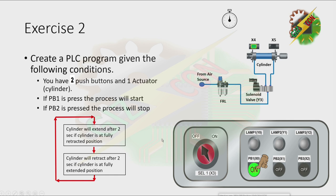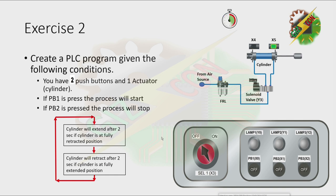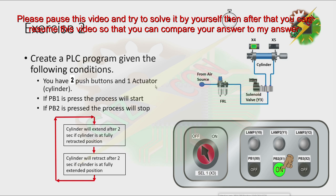Let's press PB1. As you can see, the only way to stop the process is by pressing PB2. Now I want you to pause this video and try to solve it by yourself. Then after that, you can resume this video so that you can compare your answer to my answer.